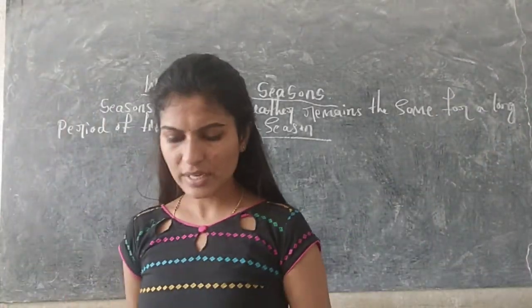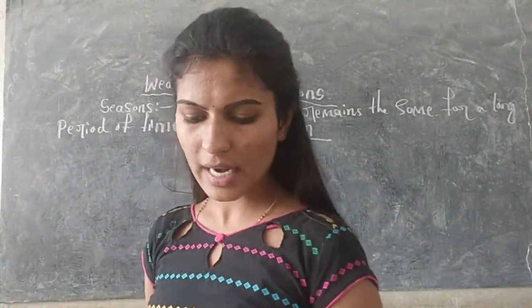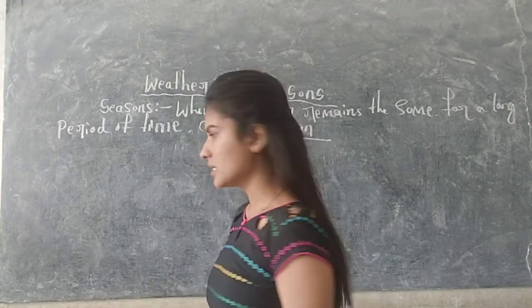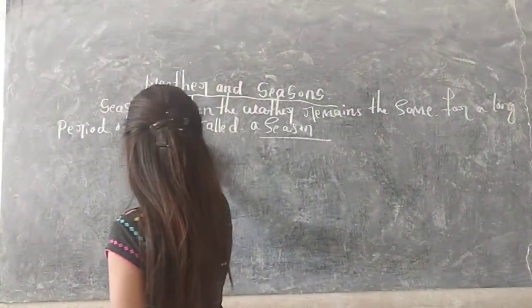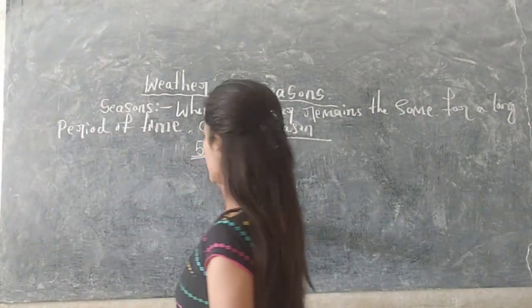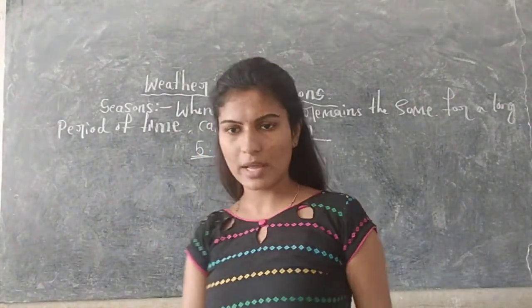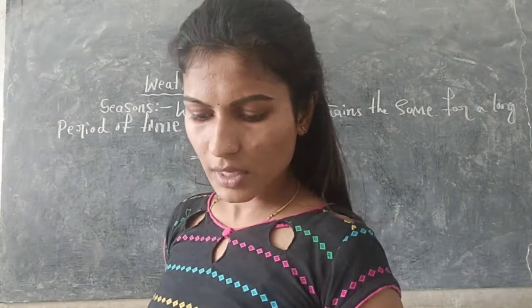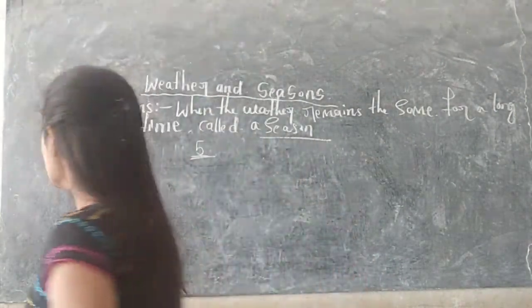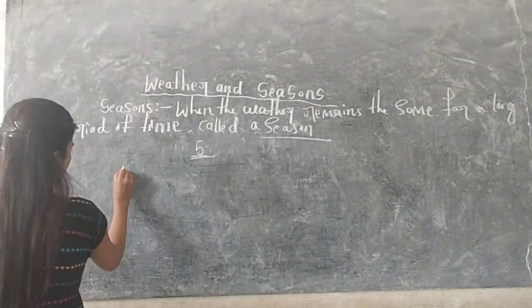In India there are five major seasons. Which are those? Those are summer, monsoon, autumn, winter, and spring.